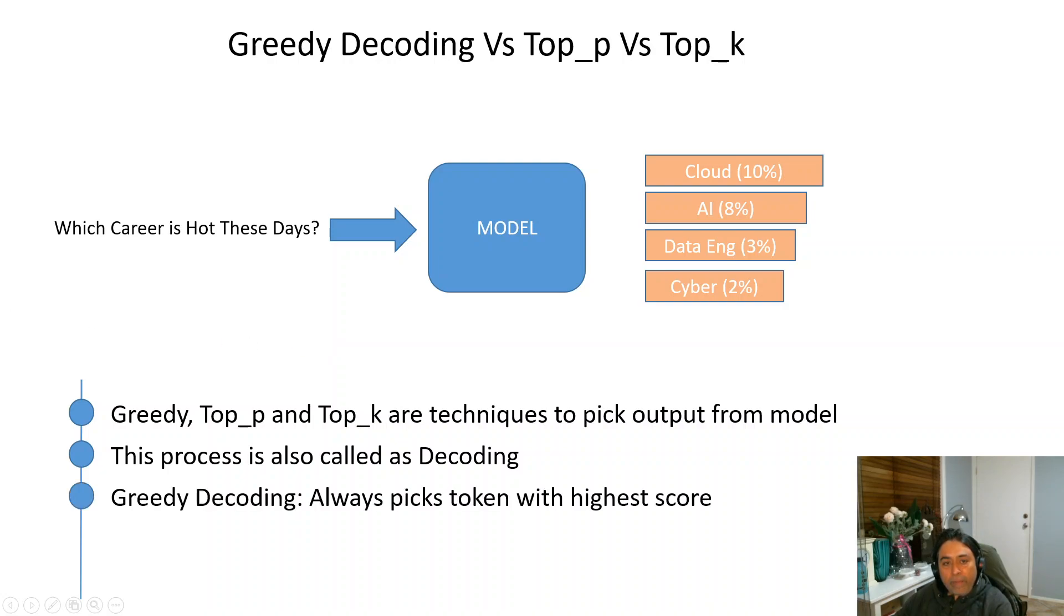Greedy decoding simply means that a model returns the topmost token or the token with the highest score to the end user. So in our case, the model is going to return cloud. Top_k means that instead of returning the top one, it narrows it down to the number given to this top_k and then randomly selects a token out of those.